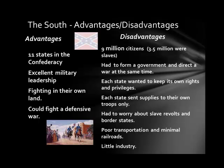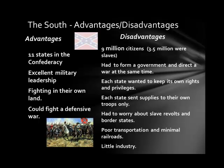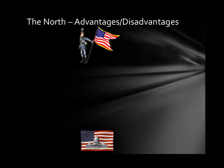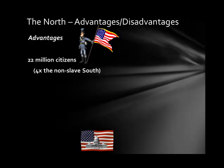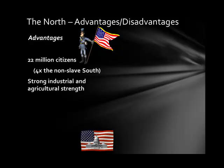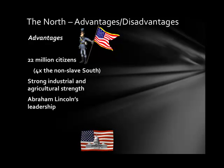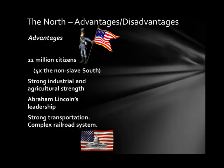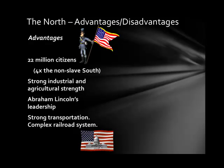The South did not have the manufacturing capability to make weapons, ammunition, clothing, and other necessities. The North had advantages including 22 million citizens — four times the non-slave population of the South — strong industrial and agricultural strength, the industry to produce weapons, ammunition, and supplies, Abraham Lincoln's leadership, a strong and complex railroad transportation system for moving men, goods, and supplies, and a very strong navy that the South did not have.